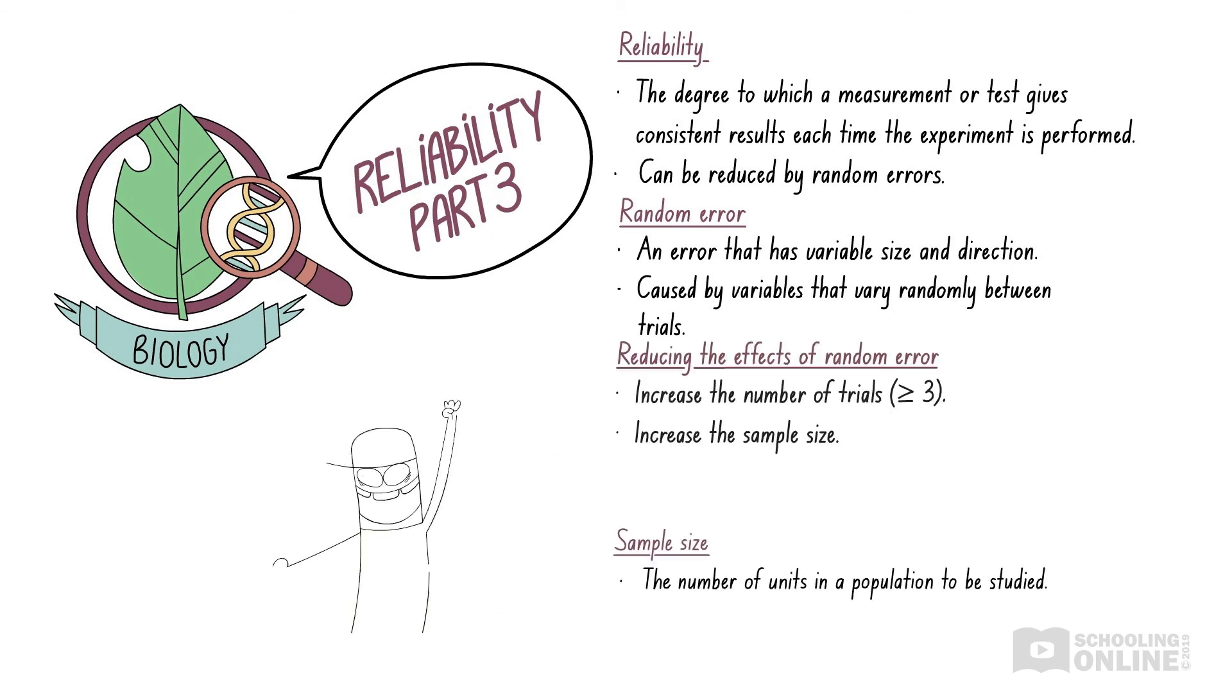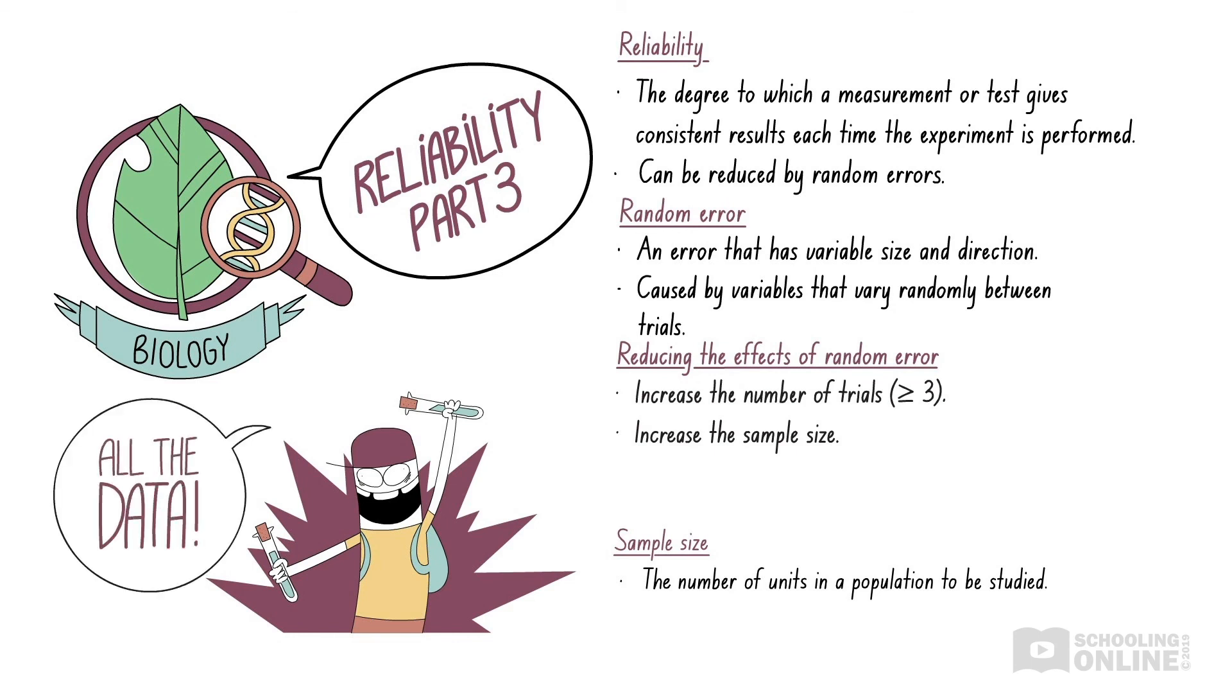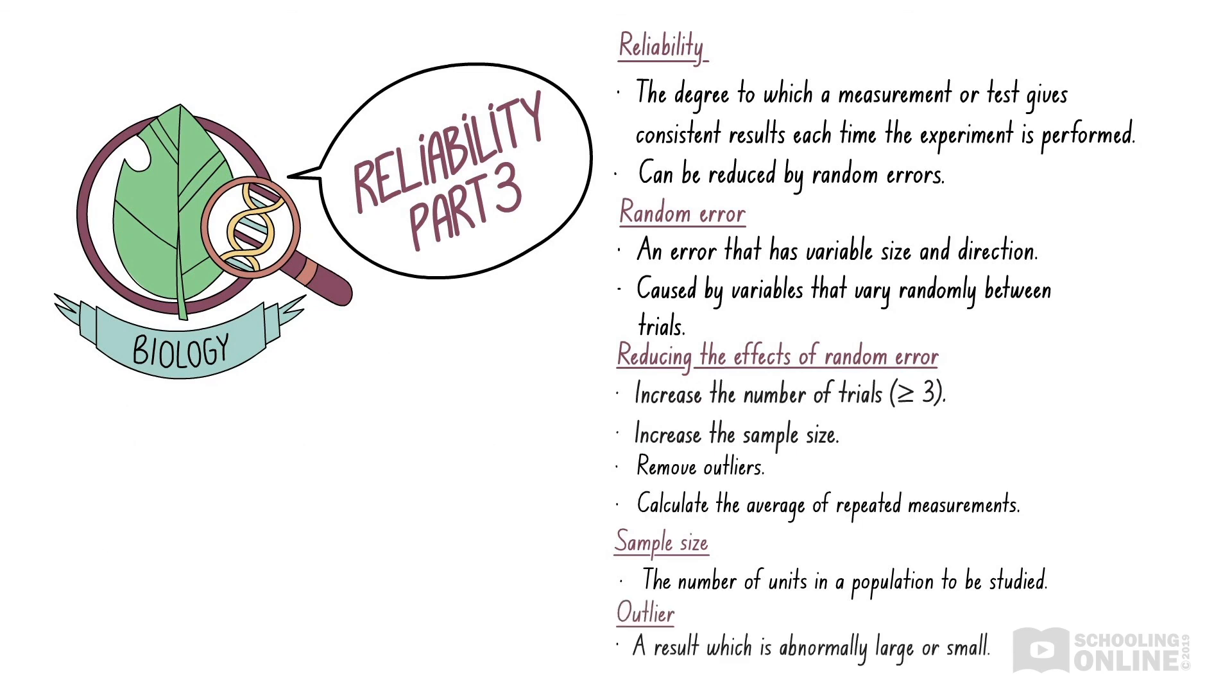We can reduce the effects of random error by increasing the number of trials we perform or the number of samples in each trial. In biology, increasing the sample size has a similar effect to conducting more trials, as it increases the number of units in a population to be studied. We can also reduce the effects of random error by removing outliers from our results and calculating the average of repeated measurements.